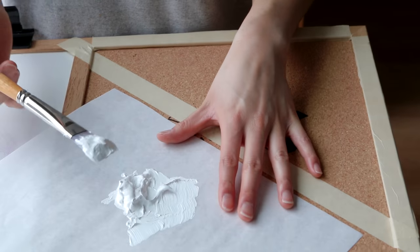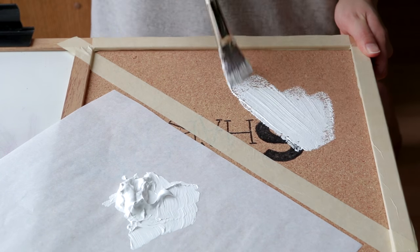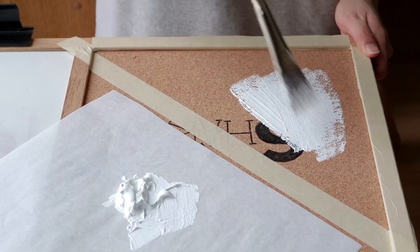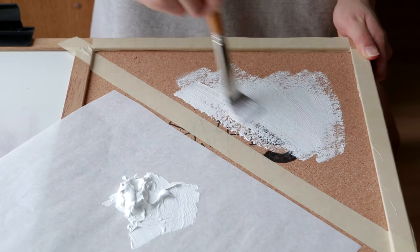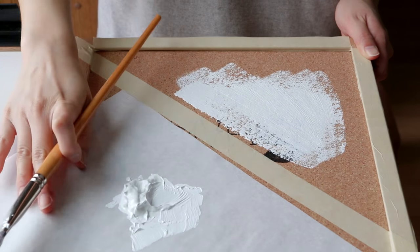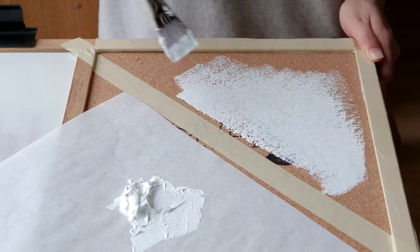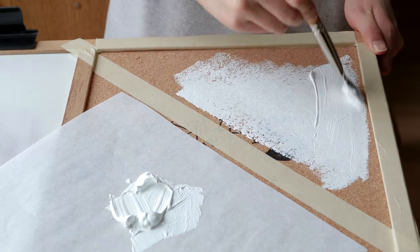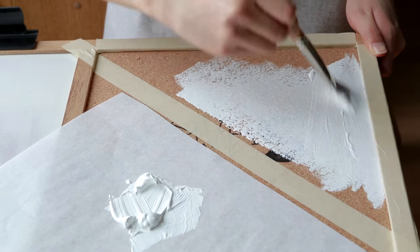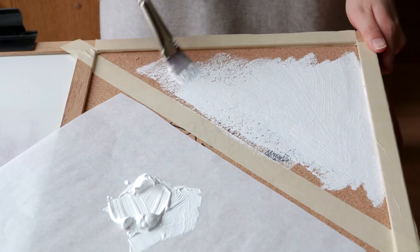After I have taped off my desired section on the corkboard, I'm just going in with some white acrylic paint and painting in the triangle. And just make sure you have a nice even coating on there. You don't want to saturate it with too much paint at first just because we do want to go back in and do a second layer.